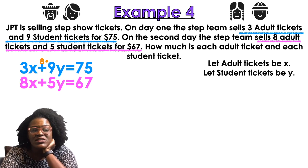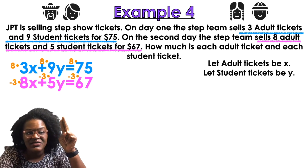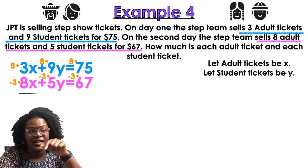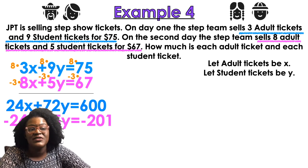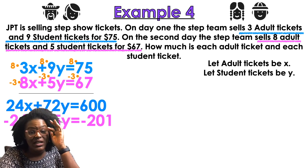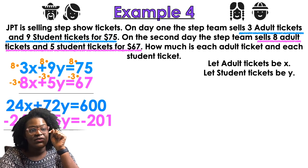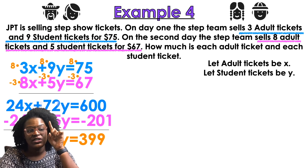I'm going to solve this by elimination. I'll multiply the top equation by 8 and the bottom by negative 3, so the X terms cancel out. That gives me 24x + 72y = 600 and negative 24x − 15y = −201. The positive 24 and negative 24 cancel out. That leaves 57y = 399, because 72 − 15 = 57 and 600 − 201 = 399. Divide by 57 — y equals 7.